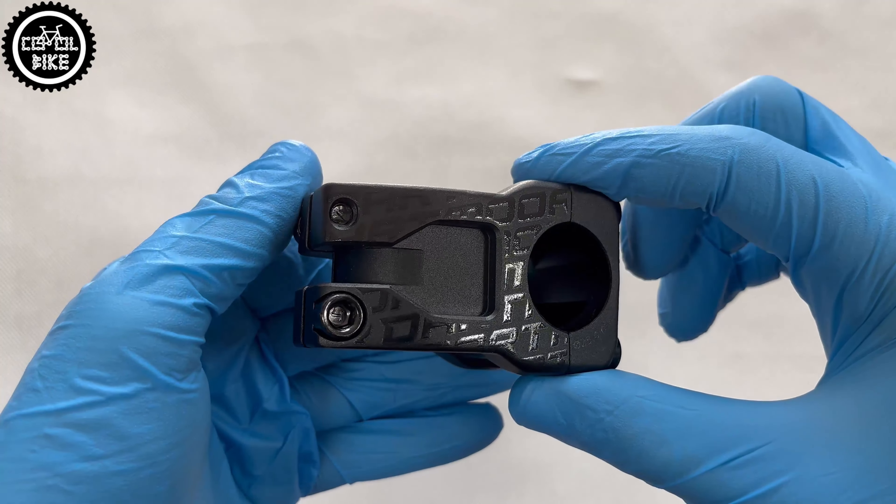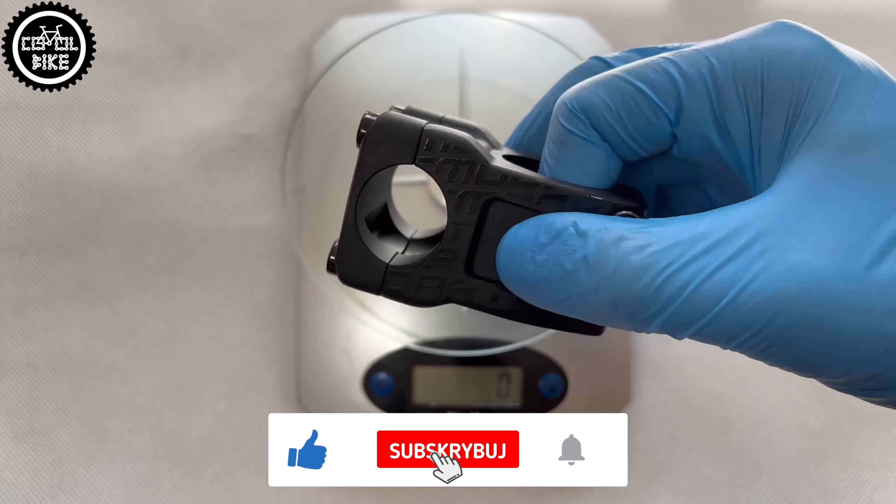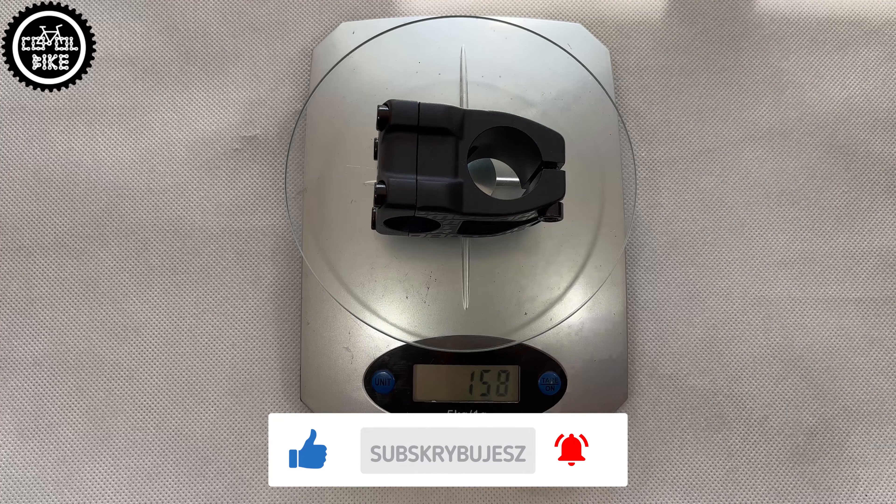I chose the shortest one for 1 inch bar and in this size Fury weighs 158 grams. For comparison even shorter Dartmoor Micron weighs 152.